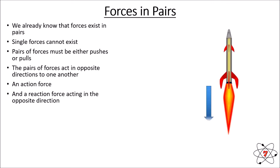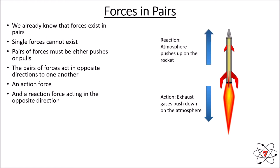Let's have a look at another example — we've got a rocket. The action is the exhaust gases push down on the atmosphere. The reaction is the atmosphere pushes up on the rocket, and the rocket accelerates upwards away from the ground. So we have a pair of forces acting in opposite directions: an action and a reaction. Something happens — the force pushes one way, the object moves the other way.